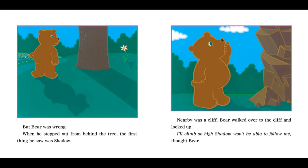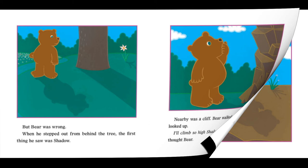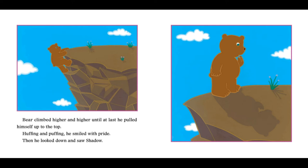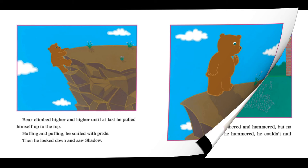Nearby was a cliff. Bear walked over to the cliff and looked up. I'll climb so high, Shadow won't be able to follow me, thought Bear. Bear climbed higher and higher until at last he pulled himself up to the top, huffing and puffing. He smiled with pride. Then he looked down and saw Shadow.